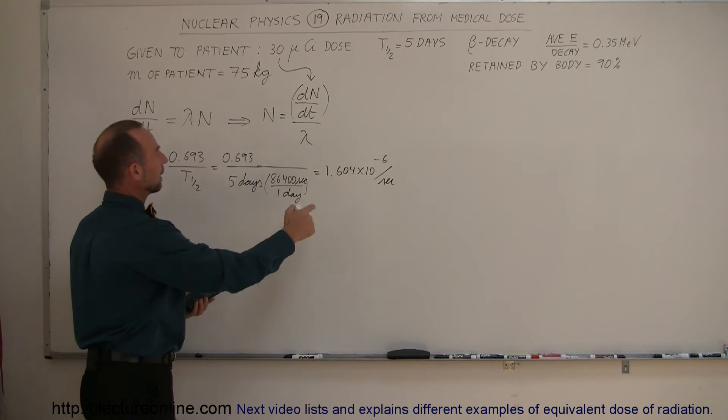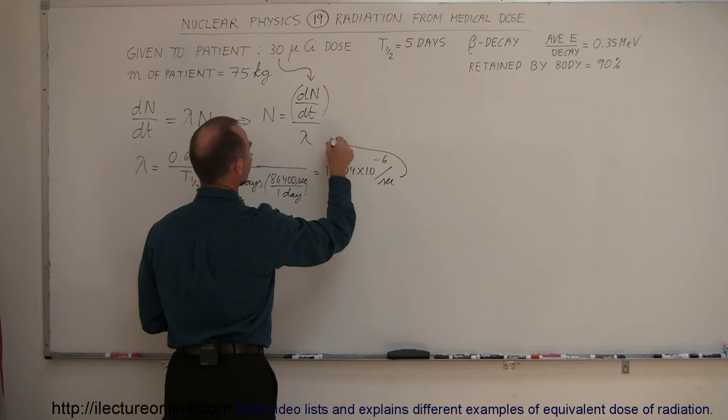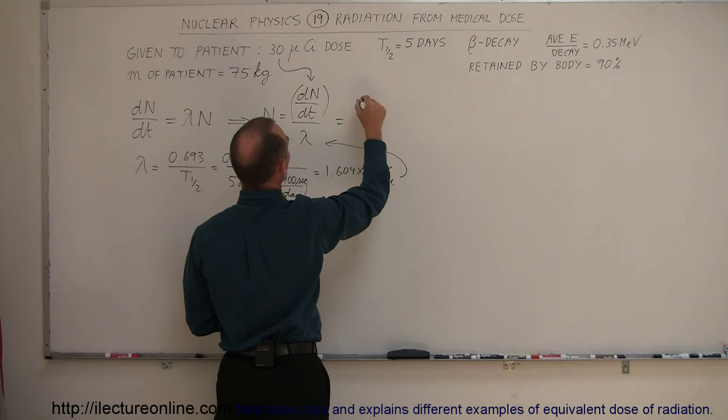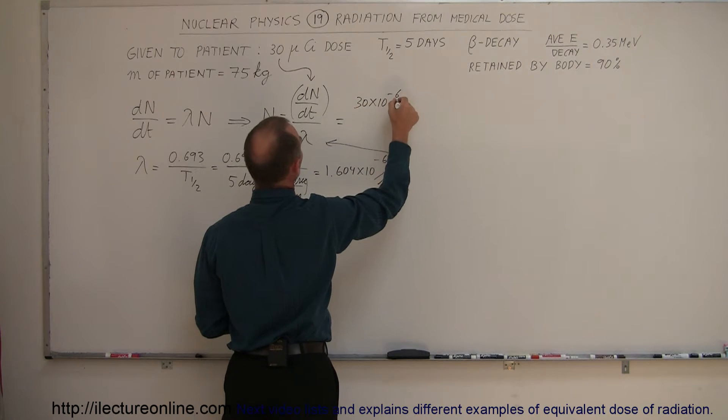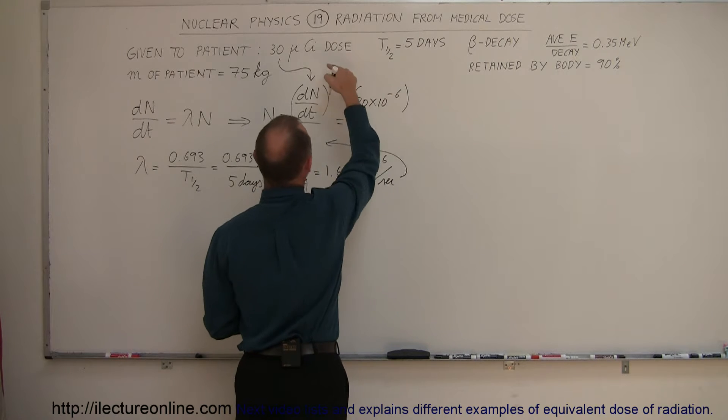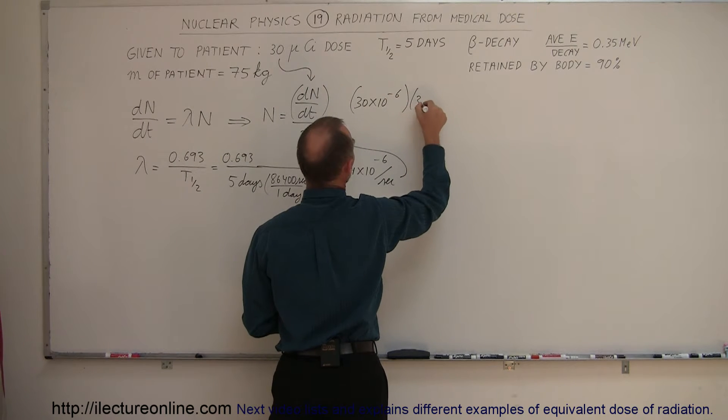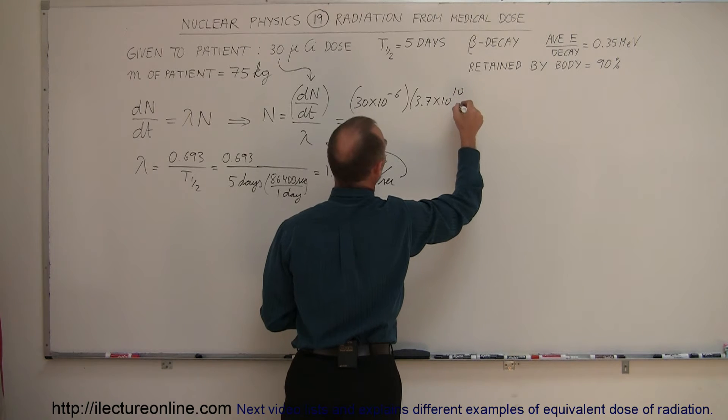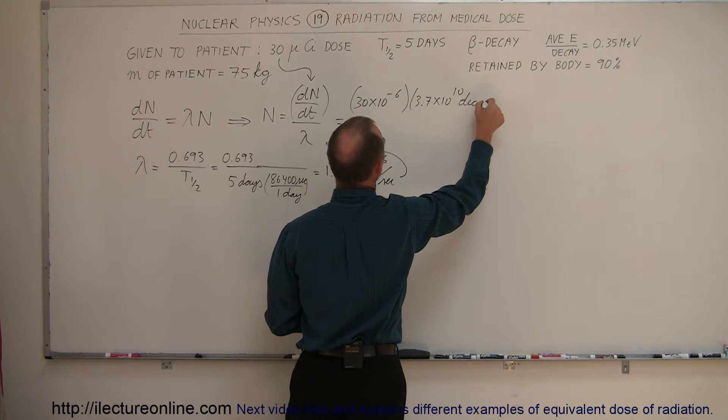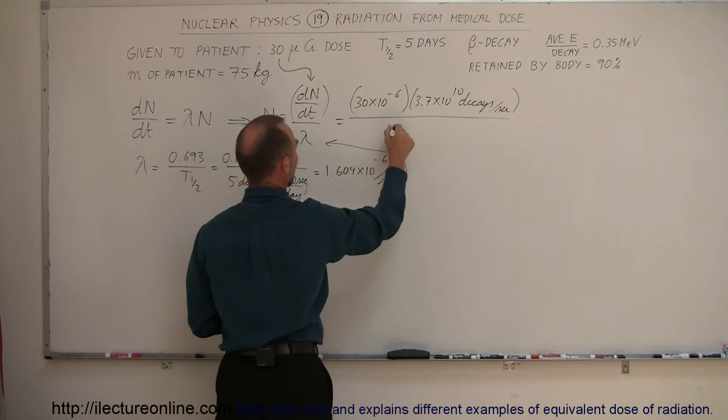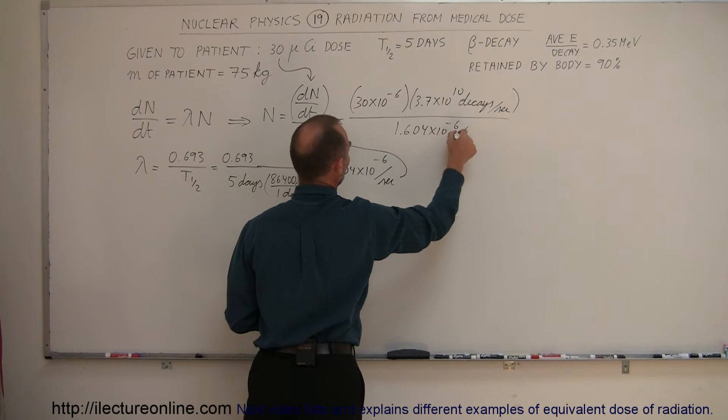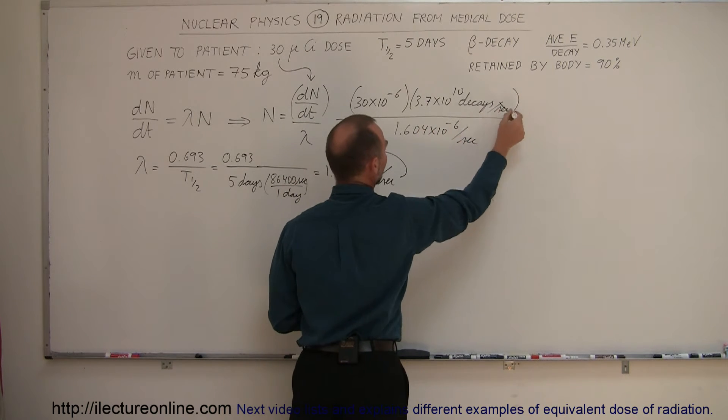Okay, I can plug that in here. When we do that, we get 30 micro, that is 30 times 10 to the minus 6, multiplied times that curie, which is 3.7 times 10 to the 10th decays per second. That would be decays per second, and we divide that by 1.604 times 10 to the minus 6 per second.